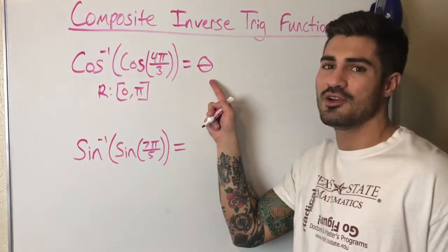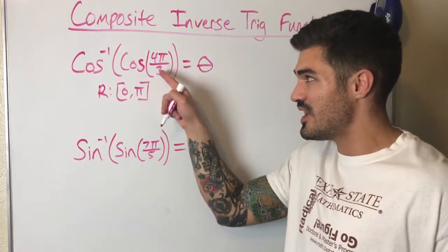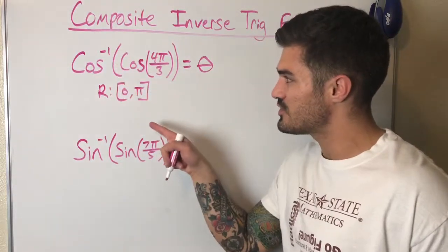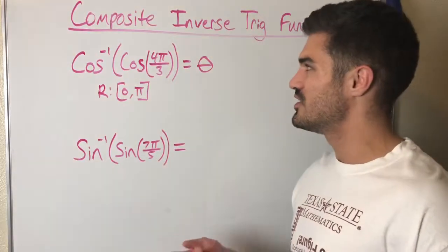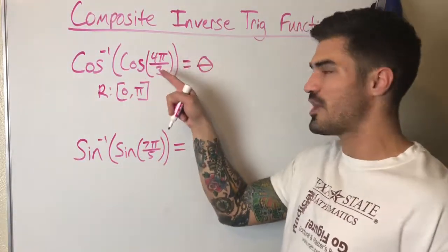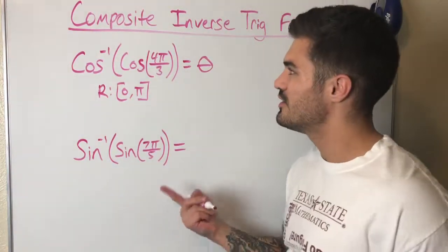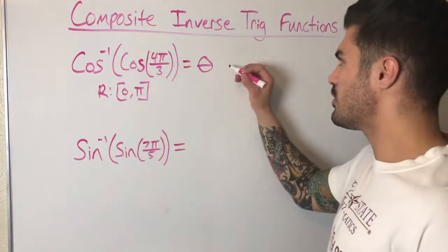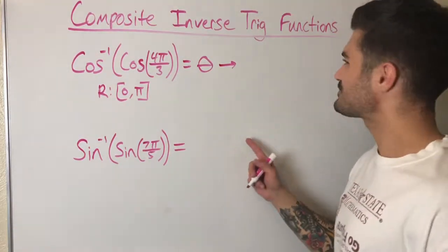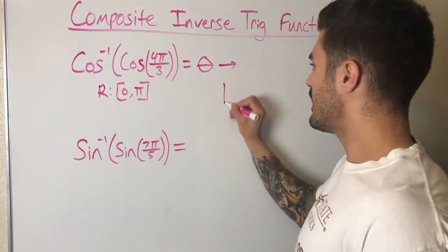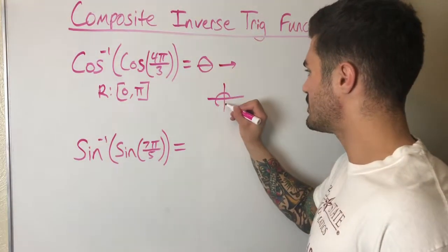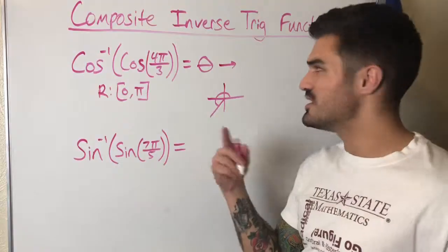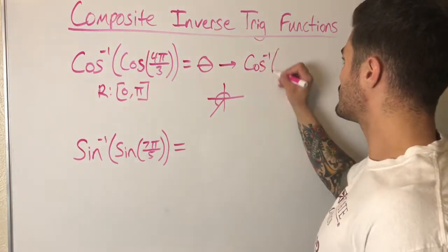We're still looking for an angle, because that's what inverse functions do — they take in a value and spit out an angle. 4π/3 is not within the range of cosine inverse, so I need a different angle that is. Luckily, cosine of 4π/3 is on the unit circle. I know 4π/3 is in the third quadrant with a reference angle of π/3, so cosine is negative one-half there.